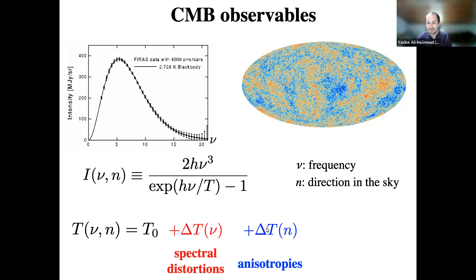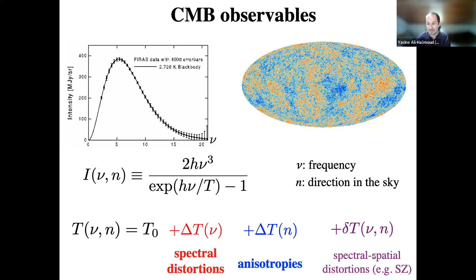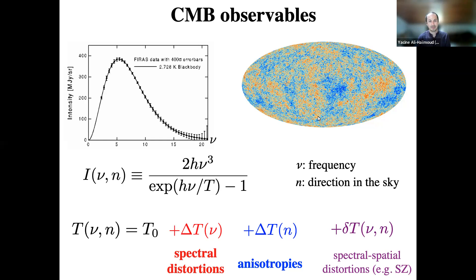This temperature could also depend on direction on the sky — this is what we mean by anisotropies, giving a map of temperature anisotropies. There can also be corrections depending both on frequency and direction — those would be spectral and spatial distortions; an example would be the Sunyaev-Zel'dovich effect. So again, just to set the stage: we're going to be talking about both spectral distortions — deviations from a perfect blackbody averaged over the sky — and anisotropies.